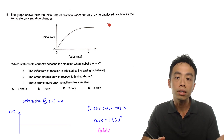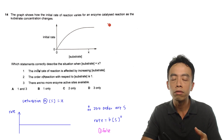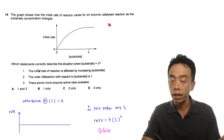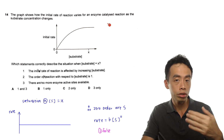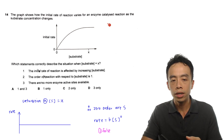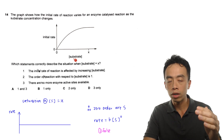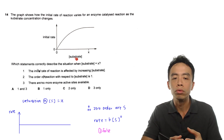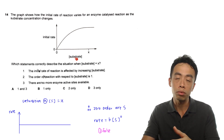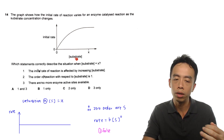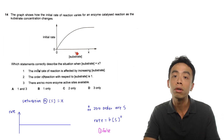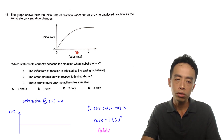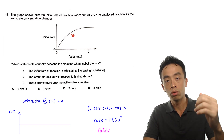The substrate needs to be attached to the active site of the enzyme for the reaction to be catalyzed and the rate to increase. At the beginning when substrate concentration is low, we have enough enzymes to catalyze the reaction converting substrate to products. So when you increase substrate concentration, we have more than enough enzymes to catalyze all these reactions, and therefore the rate of the reaction will also increase.